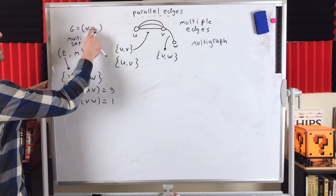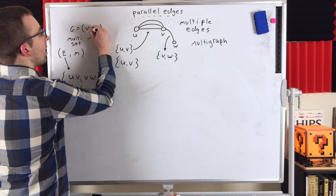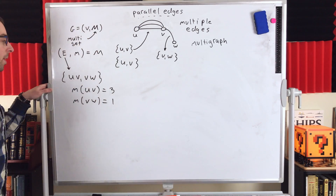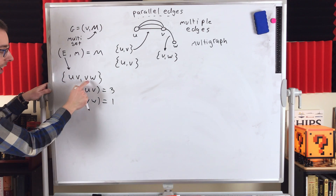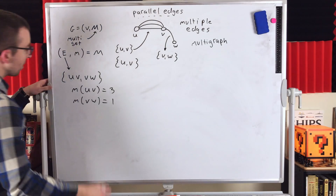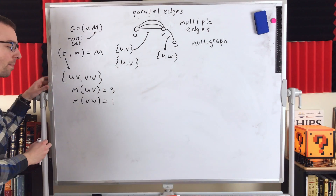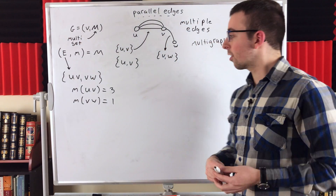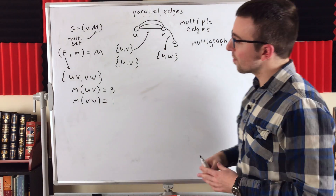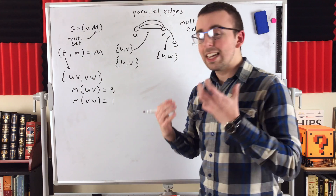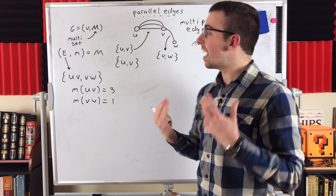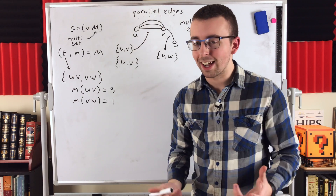We could just call the multi-set capital M. We're saying this multi-set M is this ordered pair: it has our edge set with the distinct edges of the graph — there are only two distinct edges — and it's paired with that function m that tells us how many times those edges actually appear. Three edges joining u and v, one edge joining v and w. That's the multi-set, and that's how we describe an edge set of a multi-graph — the edge set of a multi-graph is a multi-set.